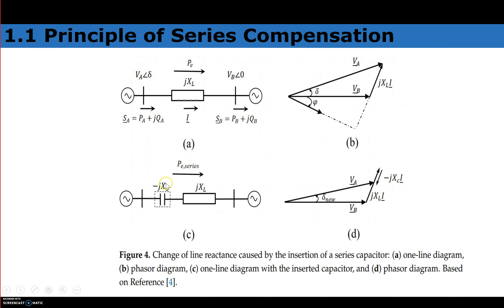When a series compensator is used, a capacitor XC is connected in series with the inductive reactance XL, giving a net reactance of XL minus XC. This compensates for XL, reducing the voltage drop. On the phasor diagram, the voltage drop comes down by the capacitive reactance XC amount, and as a result the sending end voltage point shifts, reducing the angle delta.